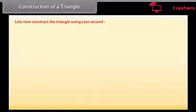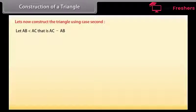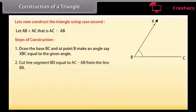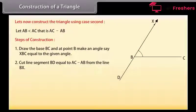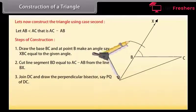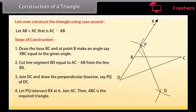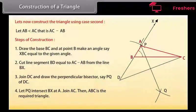Case 2: AB is less than AC, i.e., AC minus AB is given. Steps of construction: Draw the base BC and at point B make an angle XBC equal to the given angle. Cut line segment BD equal to AC minus AB from the line BX. Join DC and draw the perpendicular bisector PQ of DC. Let PQ intersect BX at A. Join AC. Then ABC is the required triangle.